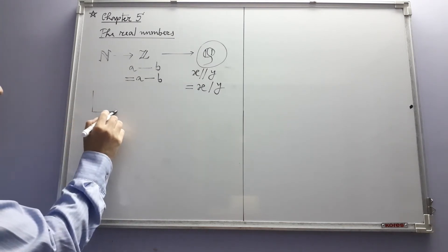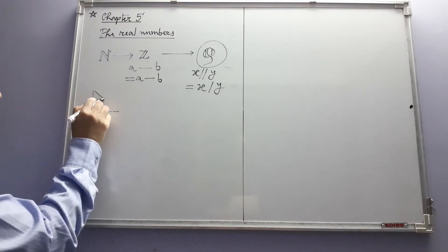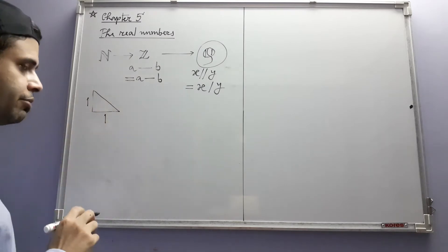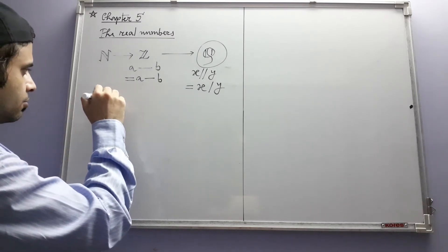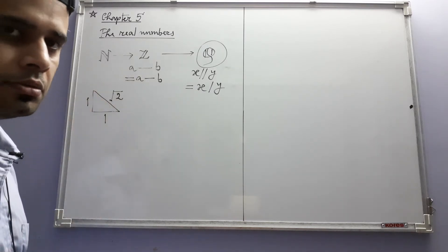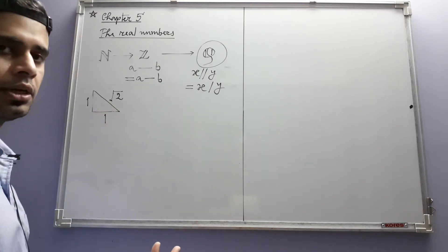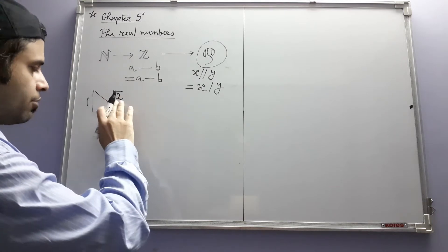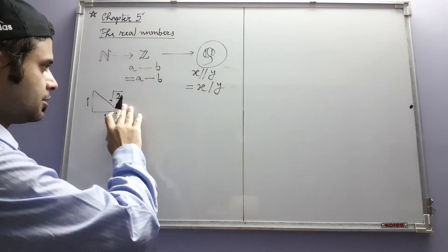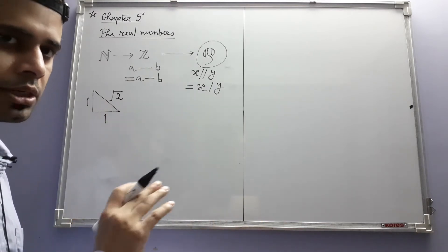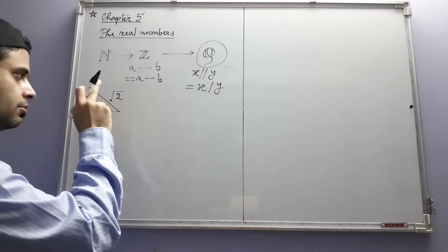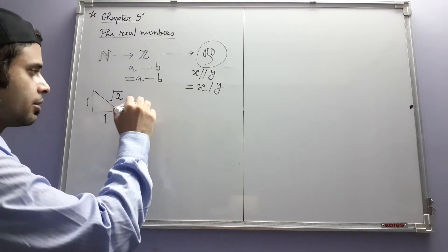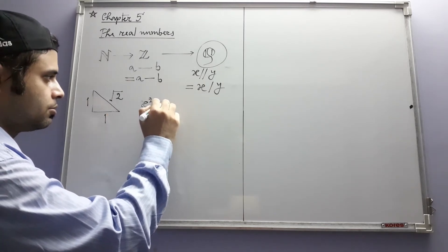We then did a similar thing: starting from the system of integers, we developed the system of rational numbers. Each rational number was defined as a formal quotient of two integers, with the caveat that the second component y must be non-zero. Once this system was developed to where we could define division, it turned out to equal the actual quotient. We verified all the usual laws of algebra in this system.